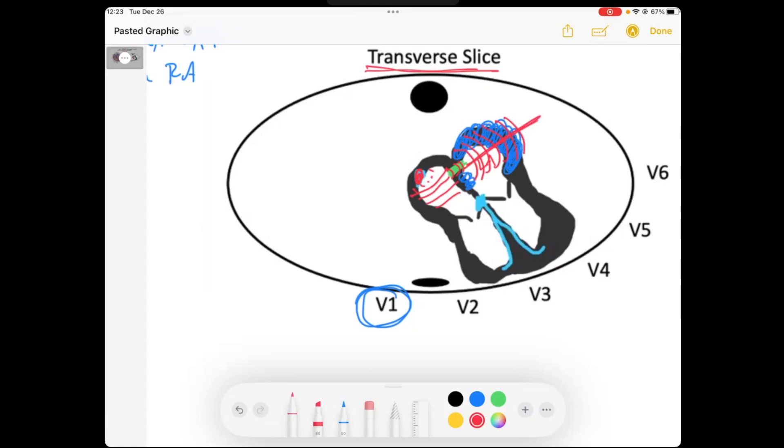And if you look, the axis of those forces is heading just that way. Well, V1 would see a lot of negative forces as the left atria is depolarizing away from V1. Because if it's depolarizing away, it's going to be negative in that lead.